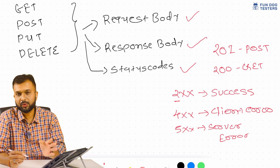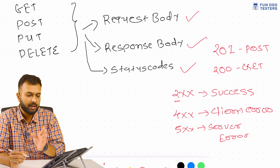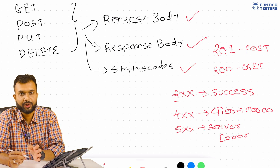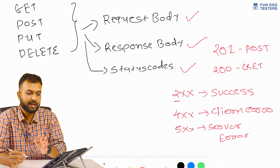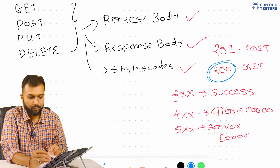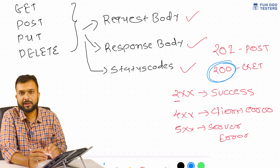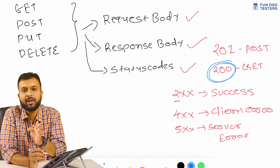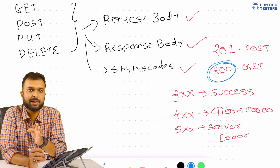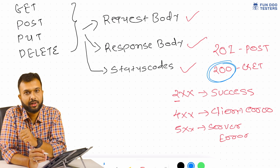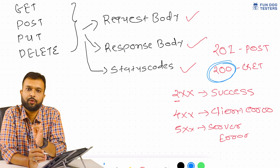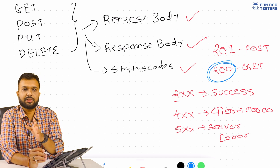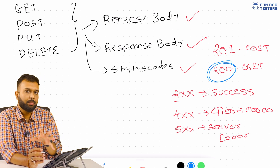If you are working on a POST request and getting a status code of 200, you can straightforwardly tell the development team, 'Hey, this is a bug — the status code has to be appropriate for the POST request. It has to be 201 instead of 200.' This is how, for status codes, we have to make sure all status codes are appropriate.